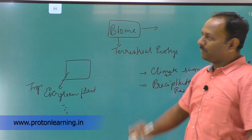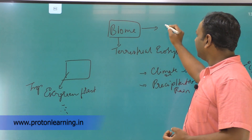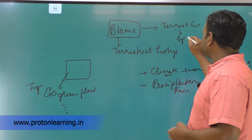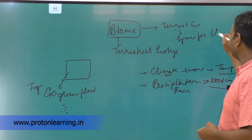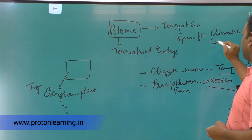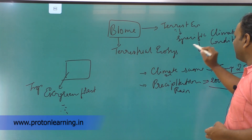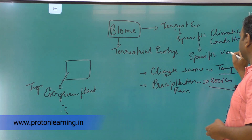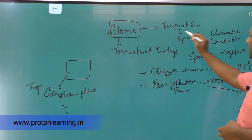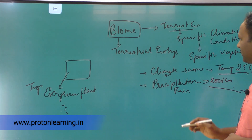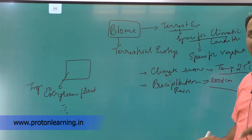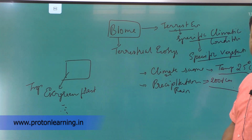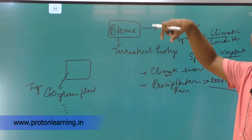If I have to define what is biome: biome is those areas or those terrestrial ecosystems which are having specific climatic conditions and which have specific vegetation. In this specific climatic conditions, it is a specific type of vegetation and similar type of organisms developed.